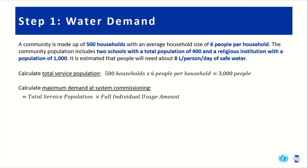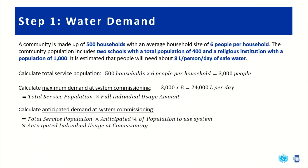Next, we'll calculate the maximum demand at system commissioning. This is achieved by multiplying the service population by the full individual usage amount, which totals 24,000 liters per day. You can also calculate the anticipated demand at system commissioning, considering a penetration rate — the percentage of people who will use the system. In this case, we'll assume 90% to get an anticipated demand of 21,600 liters per day.